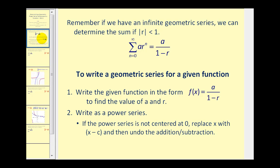Remember, if we have an infinite geometric series, we can determine the sum if the absolute value of r is less than one. If we have a geometric series in this form where the absolute value of r is less than one, the infinite sum is equal to a — the first term — divided by the quantity one minus r.